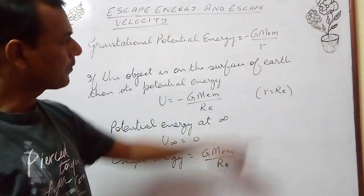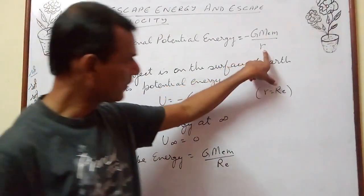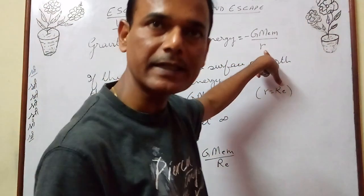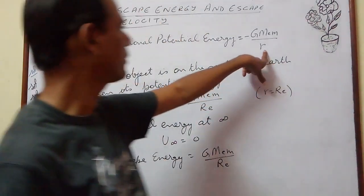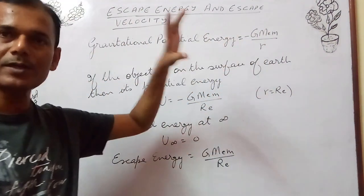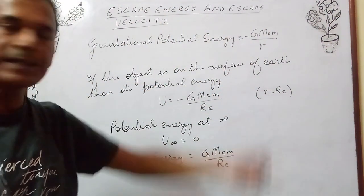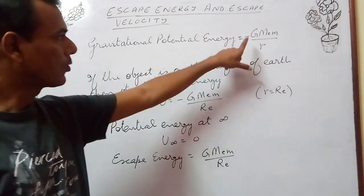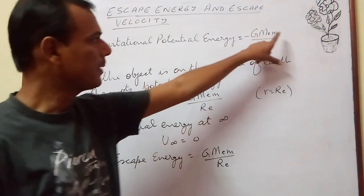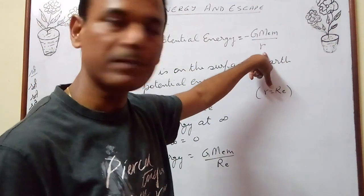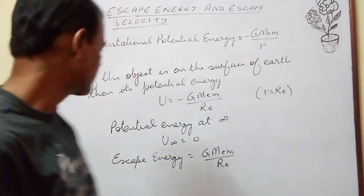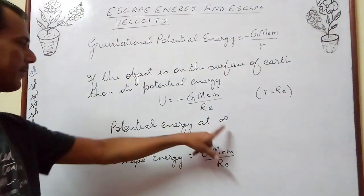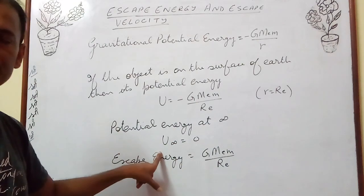Now if in place of r we write infinity, that means we want to find the potential energy at infinity. Minus G·Me·m divided by infinity becomes 0, so the potential energy at infinity is 0.